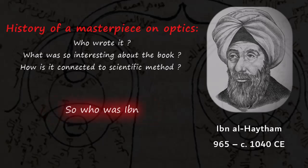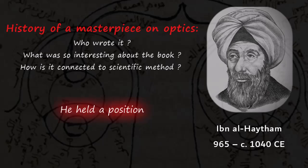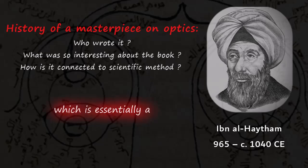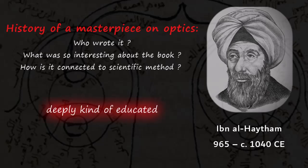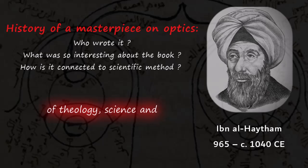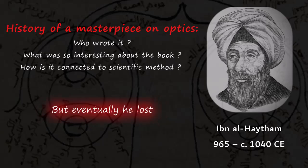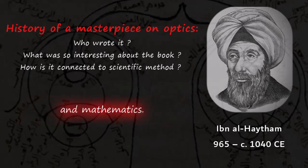So who was Ibn al-Haytham? He was born in 965 CE in Basra, which is in Iraq. He held a position of vizier in Basra, which is essentially a kind of ministerial position, and he was deeply educated in various aspects of theology, science, and mathematics. But eventually he lost interest in theology and gravitated more towards science and mathematics.